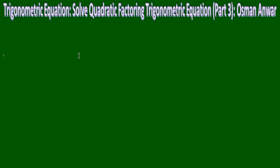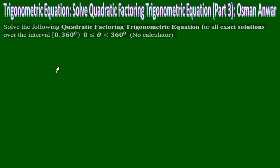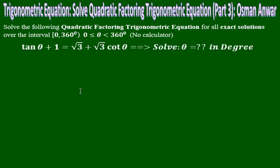This is part 3 of quadratic factoring in trigonometric equations. Solve the quadratic factor in trigonometric equation for all exact solutions over the interval 0 to 360 degrees, where theta is between 0 and 360, no calculator. We're going to solve for theta in degrees.